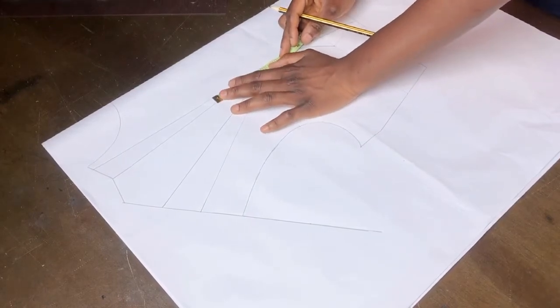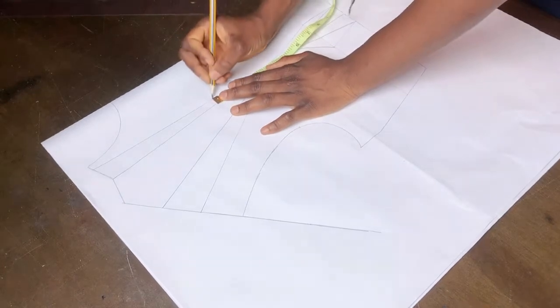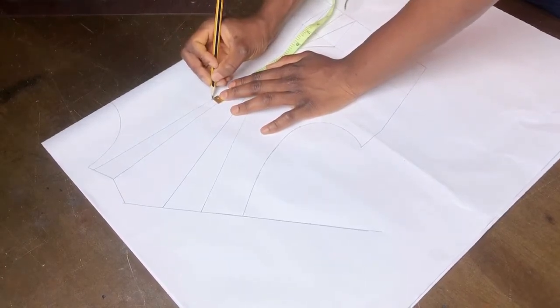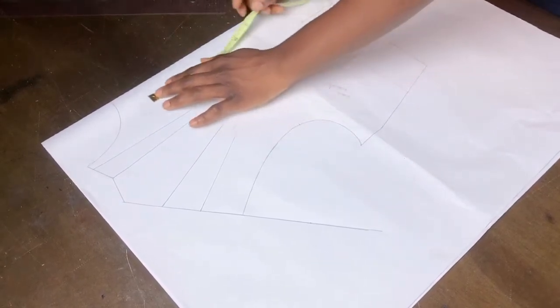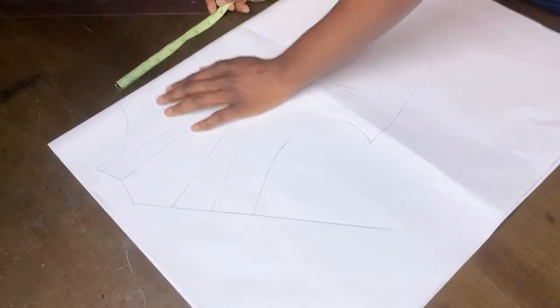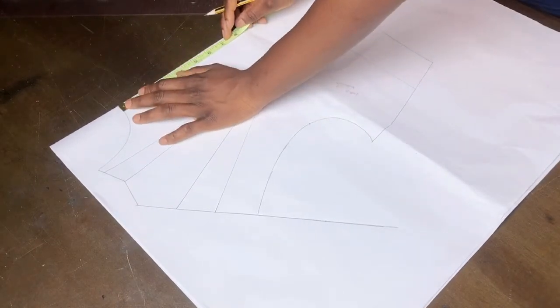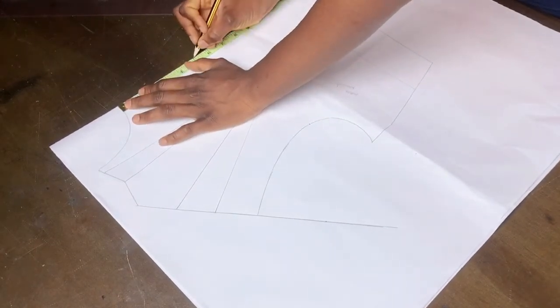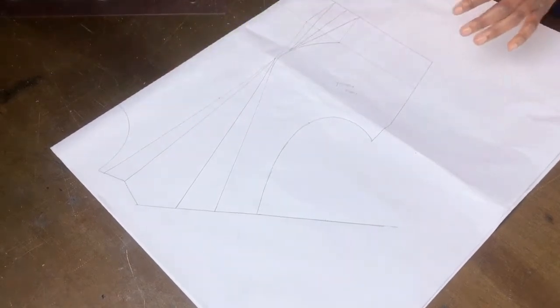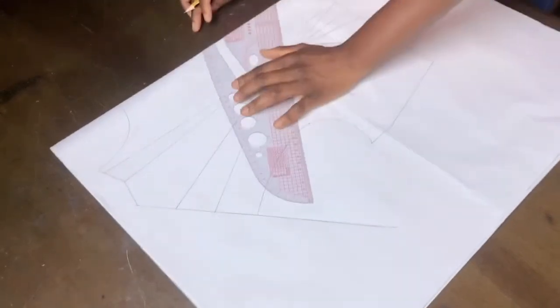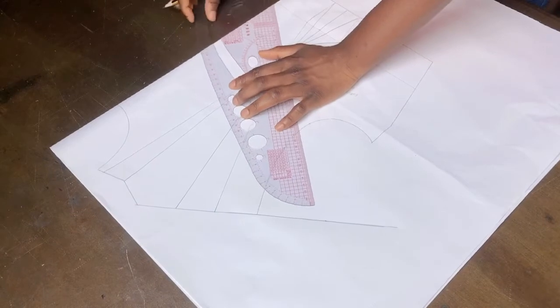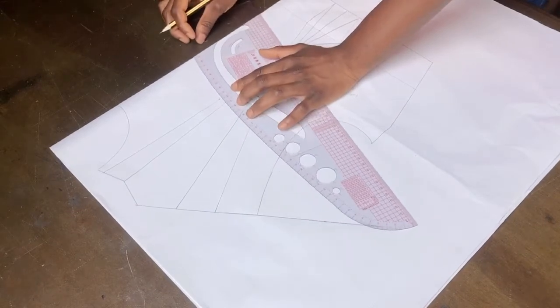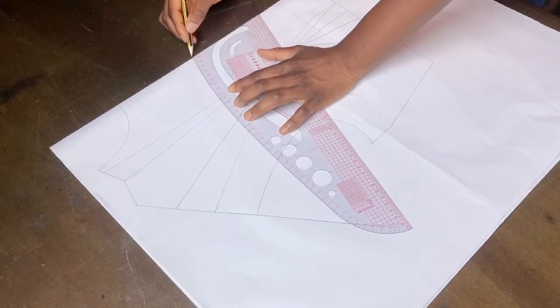Next, mark the height of the cape from the bust point, and I use four inches here. The next thing to mark is the neck depth of your off shoulder. For me, five inches is okay. You can go lower or higher if you want. So connect the cape height, that is the four inches, to the five inch neck depth mark.